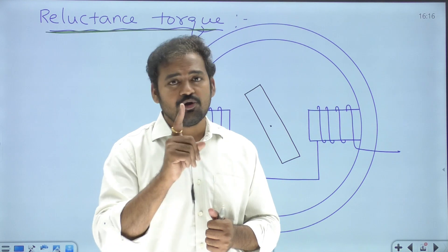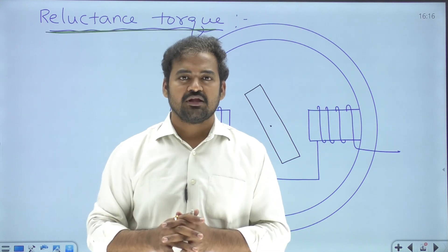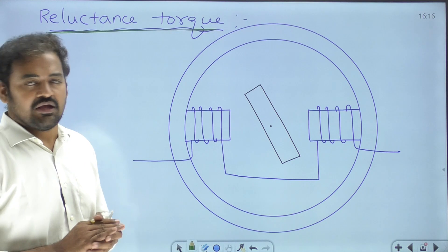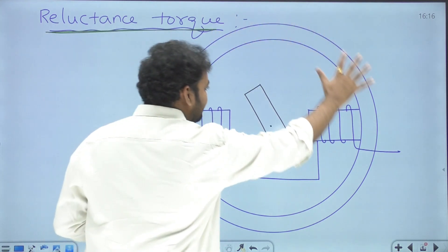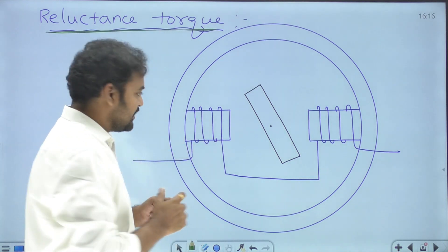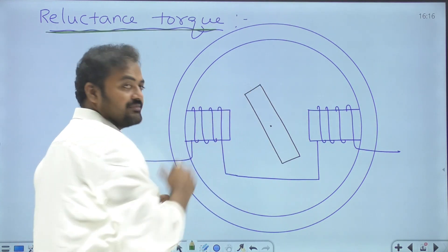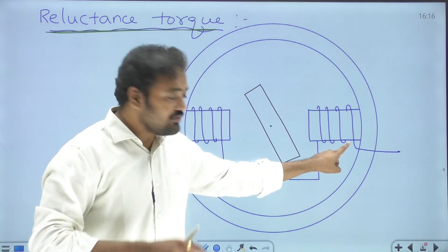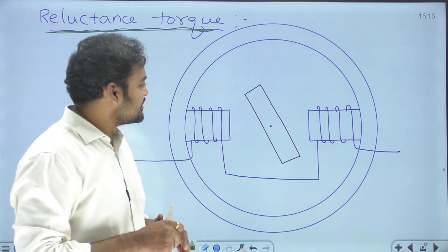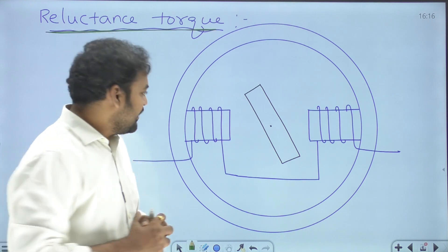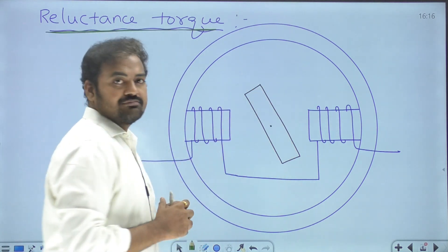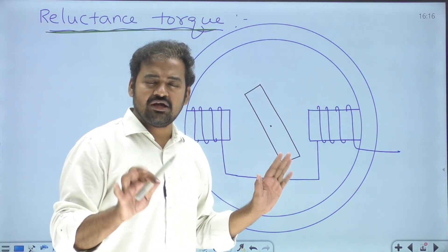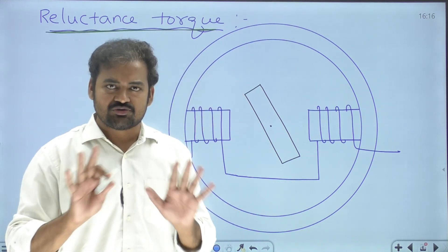Just as current flows through low resistance when two resistors are in parallel, flux will always pass through the low reluctance path. In the reluctance rotor circuit, the blue is the stator magnet and the black is a freely moving rotor body. There is a winding on the stator magnetic circuit — concentrated type — but no winding on the rotor. The rotor is simply a freely moving ferromagnetic material with no excitation.